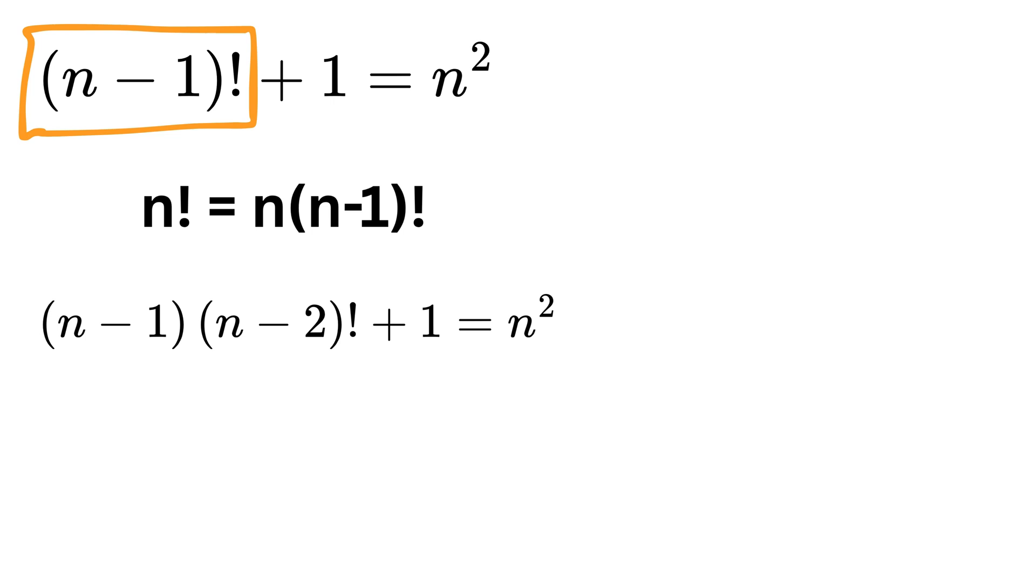Also note that by definition, we use 0 factorial as 1. Now take this one on the right-hand side to get n minus 1 times n minus 2 factorial equals n square minus 1.